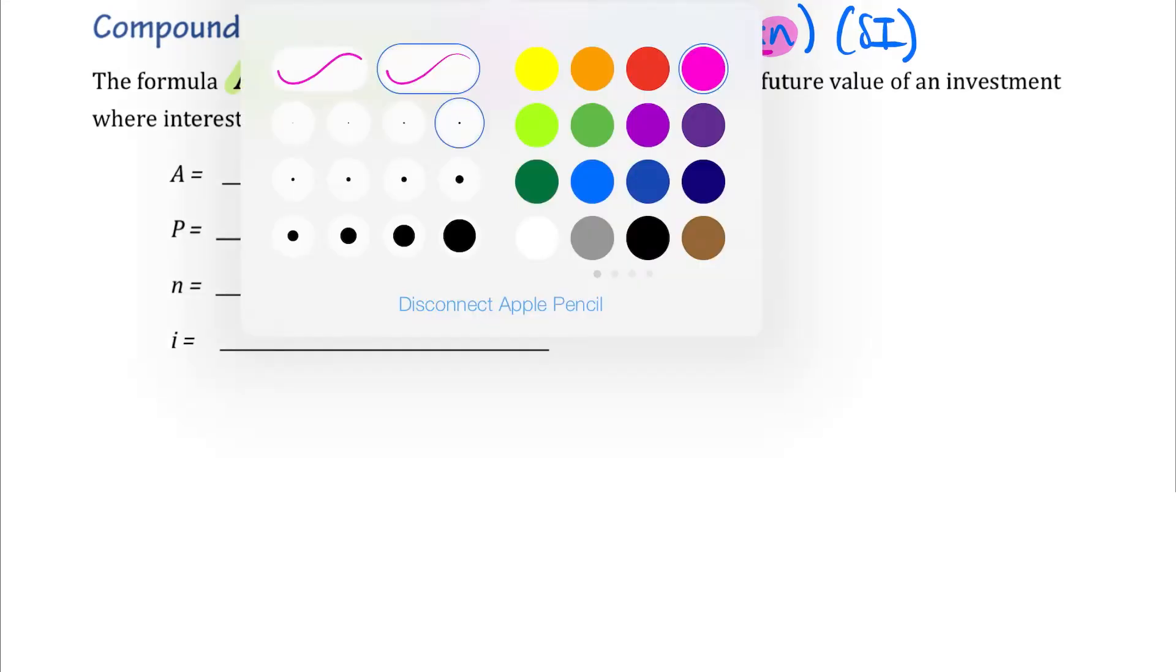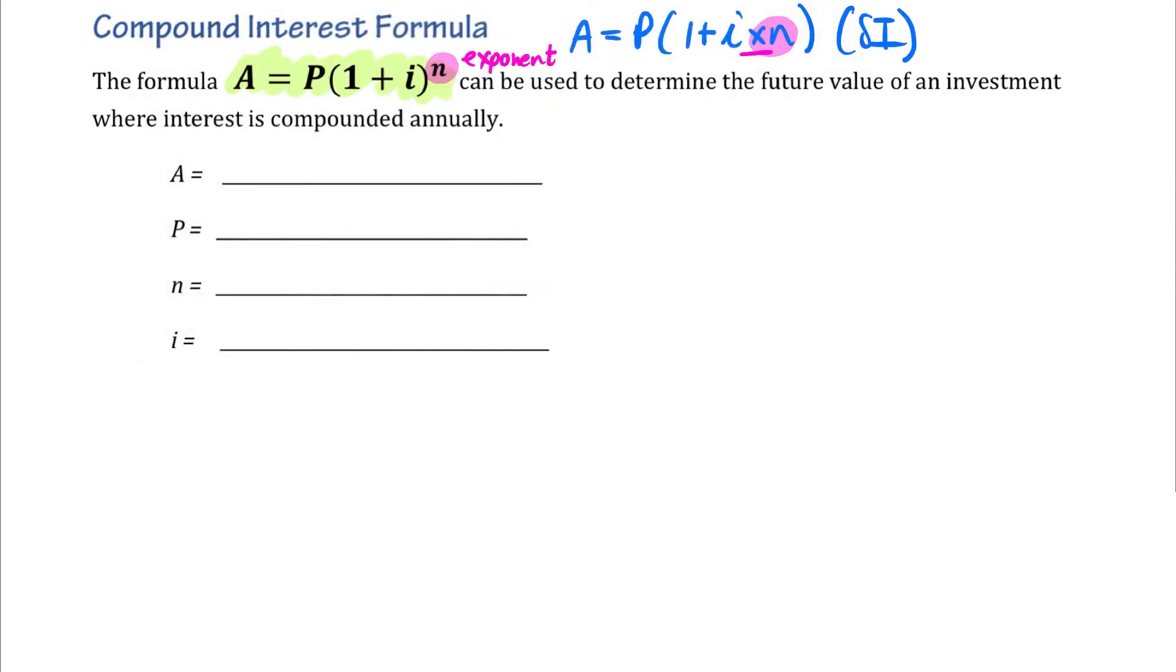So because these formulas are so similar, then these letters represent the same ideas as what we did with the simple interest formula. So for example, A is the total accumulated amount of money in my bank account at the end of my investment. Now remember, we can also have a compound interest loan, in which case A represents the total repayment of that loan. It's going to be more than I borrowed.